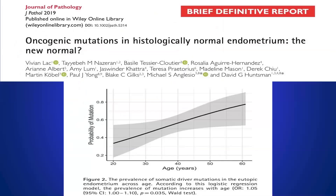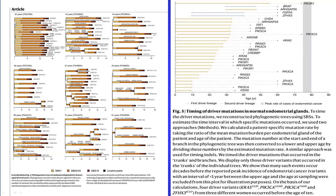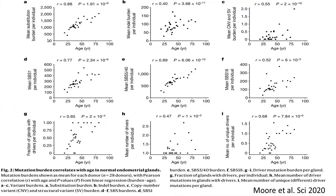In terms of endometrium, people have also reported the same thing: as a person ages, more mutations are found. A very nice paper published this year in Nature reported that in normal endometrium with no pathology, there are actually lots of cancer driver mutations. These cancer driver mutations quickly take over and dominate some of the clones. There is also age dependency in the accumulation of these mutations.